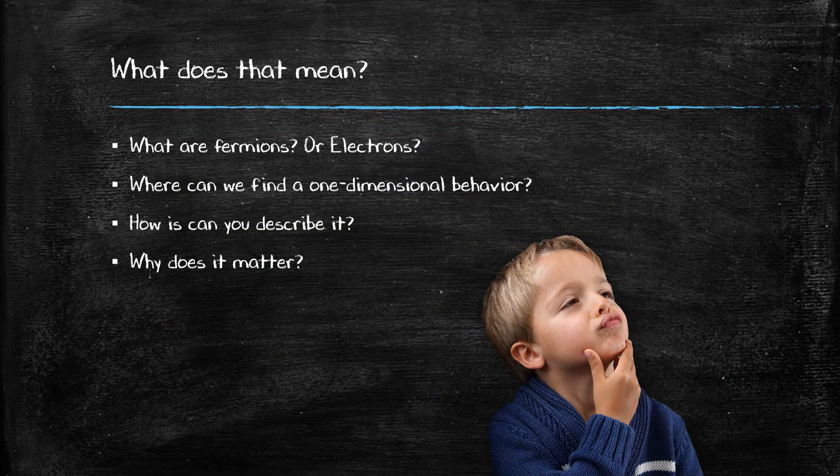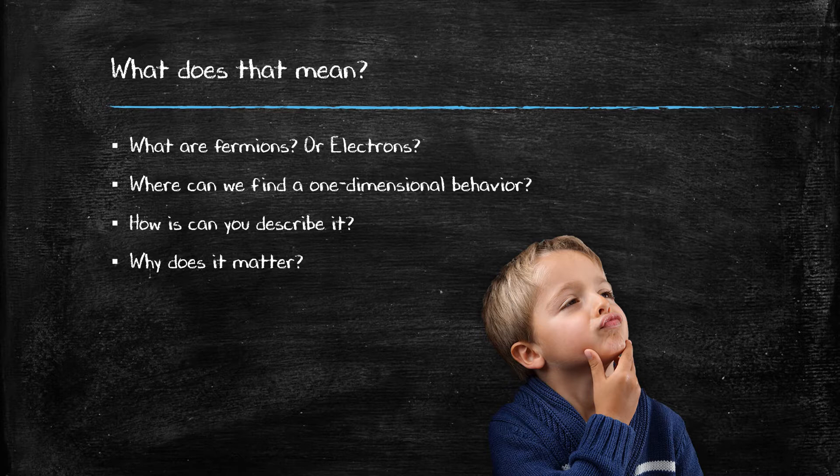Here I have outlined some of the things I'm going to cover in this presentation. These include things like what electrons or fermions are, where we can find them, how to describe their movements and interactions in 3D or 1D, and why any of this matters at all.